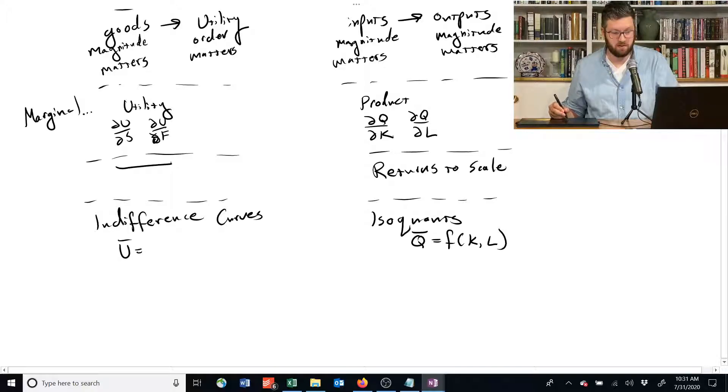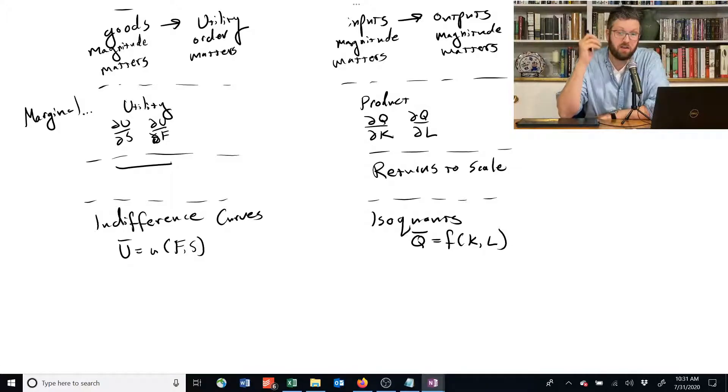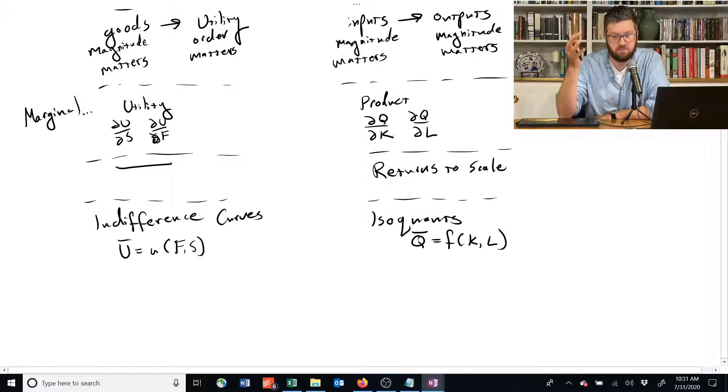And this side, we have indifference curves where we set the utility function equal to some fixed amount of utility. And that tells us all the combinations of food and shelter that yield the same utility. And since we prefer whatever option has the highest utility, if these different combinations of food and shelter give us the same utility, then that means we're indifferent among all of them.